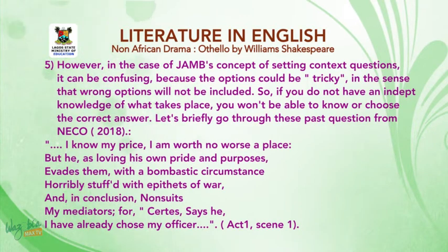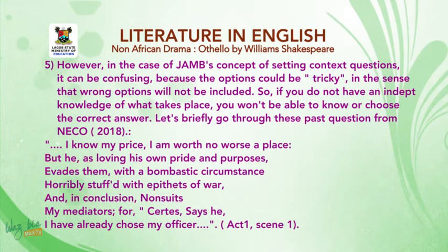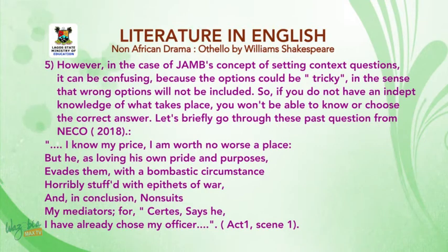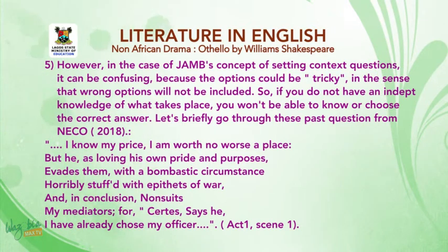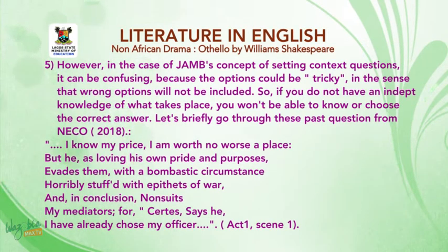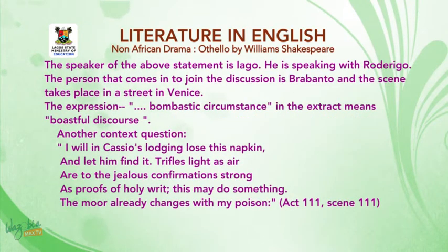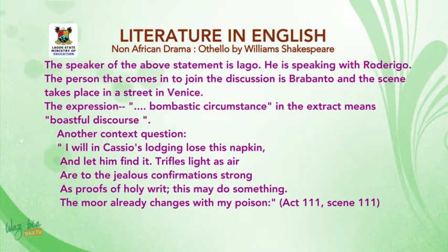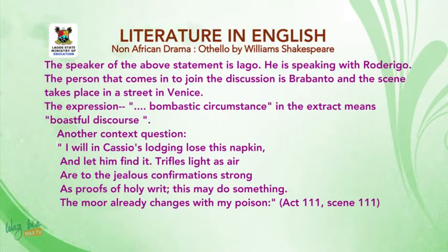Let's briefly go over this past WAEC question for 2018. The first context question reads: 'I know my price. I am worth no worse a place, but he, as loving his own pride and purposes, evades them with a bombastic circumstance, horribly stuffed with epithets of war. And in conclusion, non-suit my mediators; for certes, says he, I have already chose my officer.' This is in Act one, scene one. The speaker of the above statement is Iago, and he is speaking with Rodrigo.